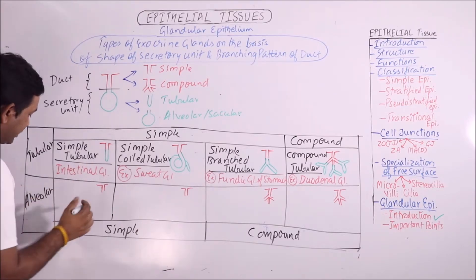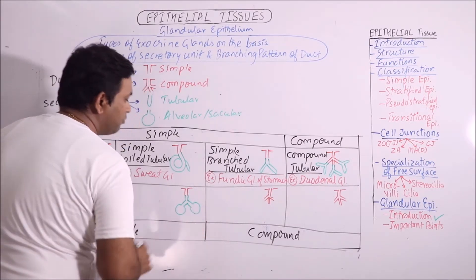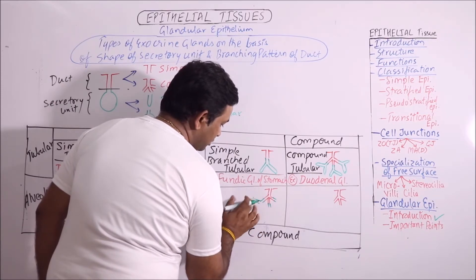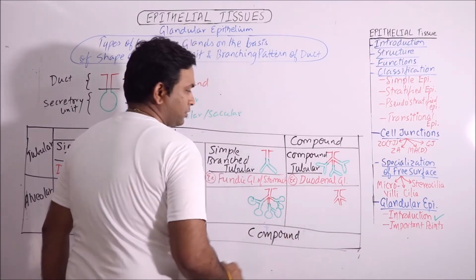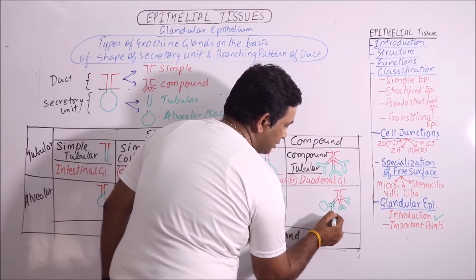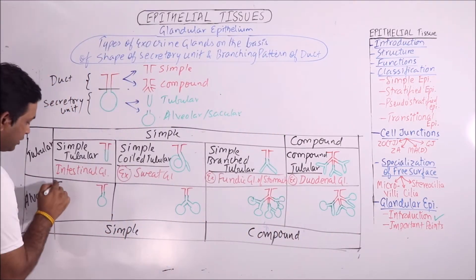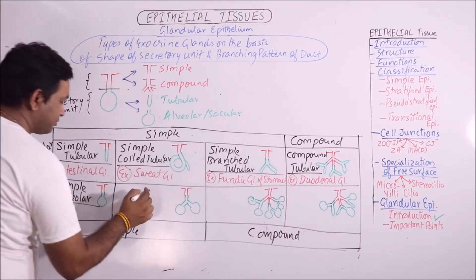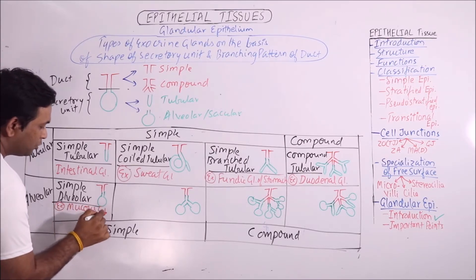Here the secretory unit is alveolar. Here the secretory unit is branched alveolar. The terminology for the simple alveolar gland is: simple is the type of duct system and alveolar is the secretory unit. The examples of such glands are mucus glands in the urethra.